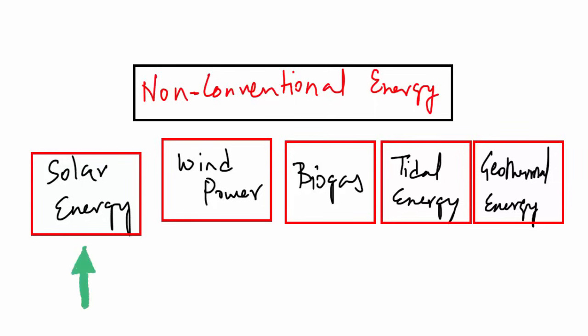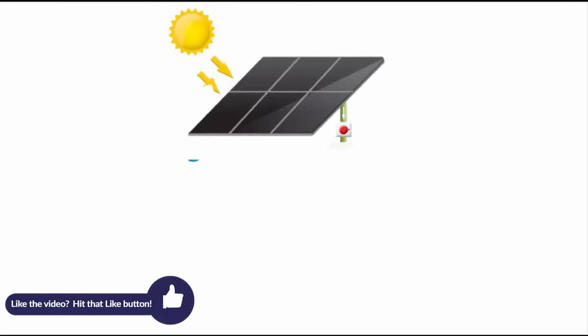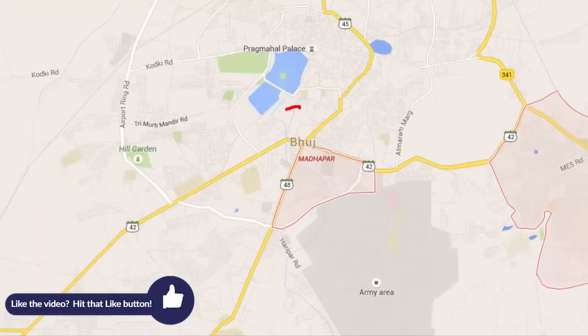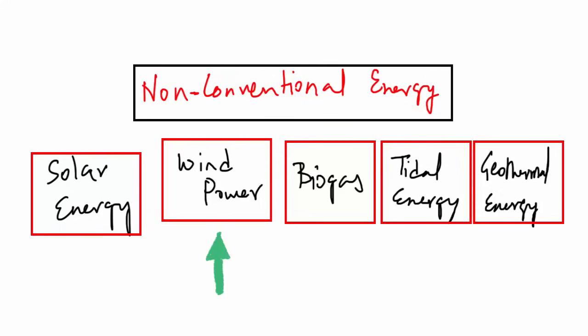The first one is solar energy. Photovoltaic technology converts sunlight directly into electricity. Photovoltaic is also referred to as solar cells. They convert the energy of light directly into electricity. The largest solar plant of India is located at Madhapur, near Bhuj, Gujarat.